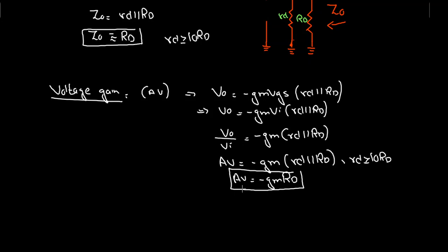This is the same equation derived for the voltage divider configuration of the depletion type MOSFET as well as the junction field effect transistor. The same equations apply for all three devices. The negative sign indicates a phase shift of 180 degrees, because this is a common source configuration — in common source configuration we always have a 180-degree phase shift. Thank you.